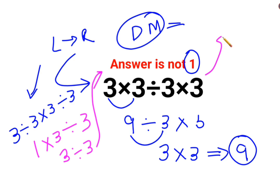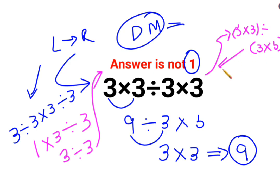Also, if the same question had been written with brackets — 3 multiplied by 3, multiplied by 3 divided by 3, divided by another bracket (3 multiplied by 3) — in that case also the answer would have been 1. But for this question the answer is just 9. I hope this is very clear to everyone. That's it for today. See you in the next video.